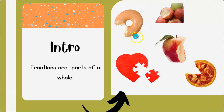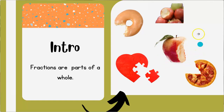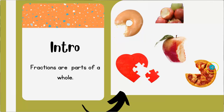Now look at the apple — same thing, right? A bite has been taken out, and that's also a fraction. Let's check out the pizza. You guessed it — a slice is missing, and that slice is a fraction of the whole pizza. So all the pictures you see on the screen are not whole, because a part has been taken out, and that part is what we call a fraction.